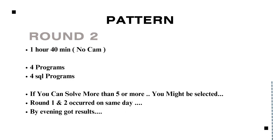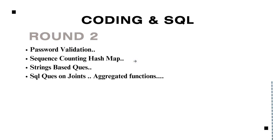It is an on-campus placement. Morning round one occurred, evening round two occurred. By afternoon, round one results were given; by evening, round two results also given. Those who qualified in both rounds are eligible for the technical interview — round three. The coding questions asked in round two include password validation, sequence counting, hashmap, string-based questions, and SQL questions on joins and aggregated functions.